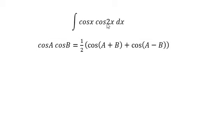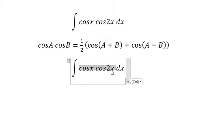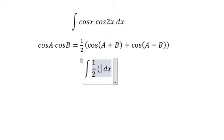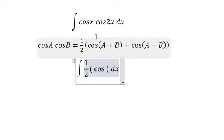So we will apply this formula in this situation. A is x and B is 2x, so it means we have 3x.